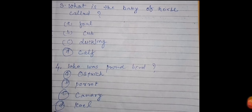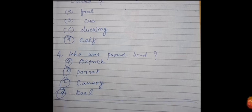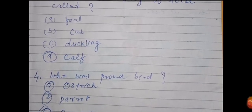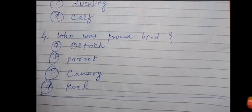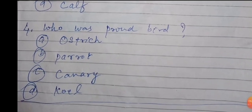Suppose that question number 3: what is the baby of a horse called? There are 4 options. Option A: Foal. Option B: Cub. Option C: Duckling. Option D: Calf. Option A is your right answer, so you will tick number A.